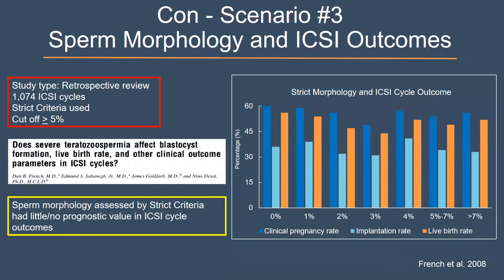In a third study including more than 1,000 ICSI cycles, French et al. 2008 compared clinical pregnancy rates in patients with different levels of normal morphology. For clinical pregnancy rate, implantation rate, and live birth rate, there was basically no change across morphology levels. These authors concluded that morphology, even using strict criteria, had no or little prognostic value, specifically after ICSI.